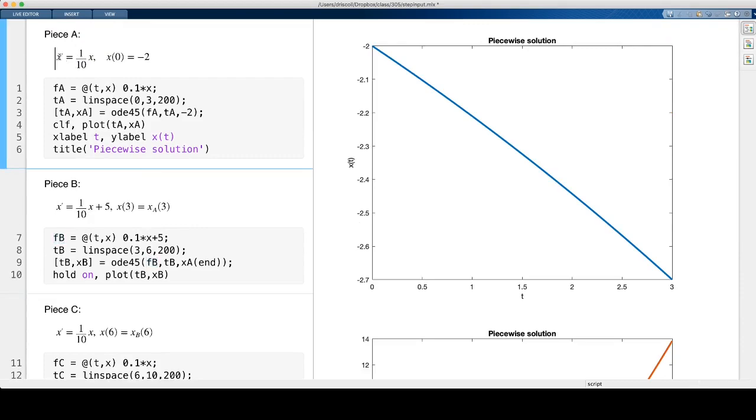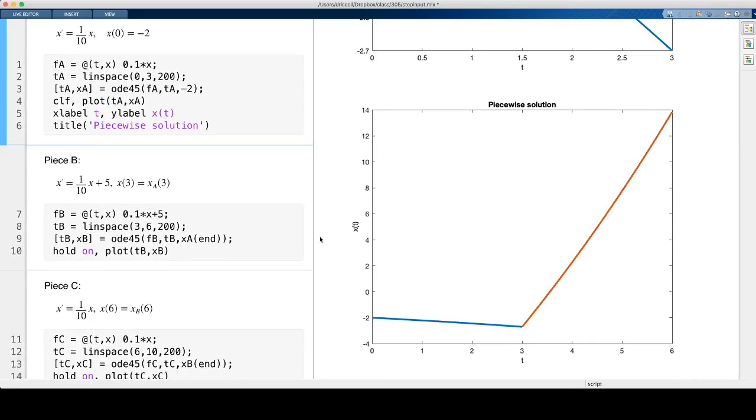This slope has a discontinuity, which actually makes sense because the original differential equation tells you that x prime is equal to something, which is continuous, that's x, plus a jump from 0 to 5 and back again. So since x prime was defined to have a jump in it, it's not surprising that the slope jumps. In fact, it should be jumping by 5.